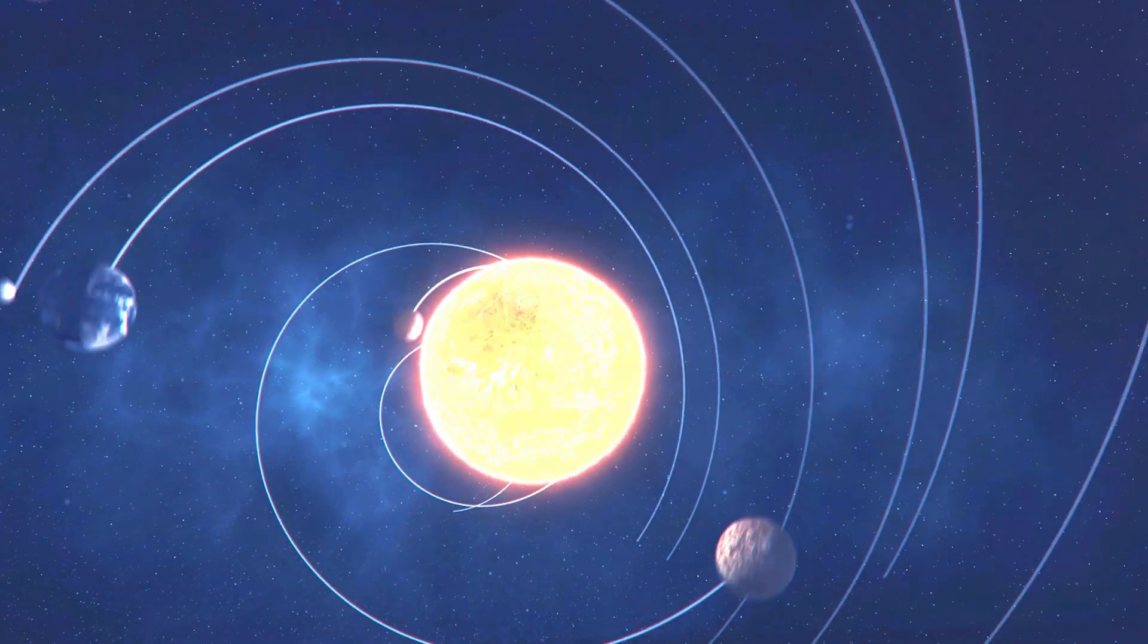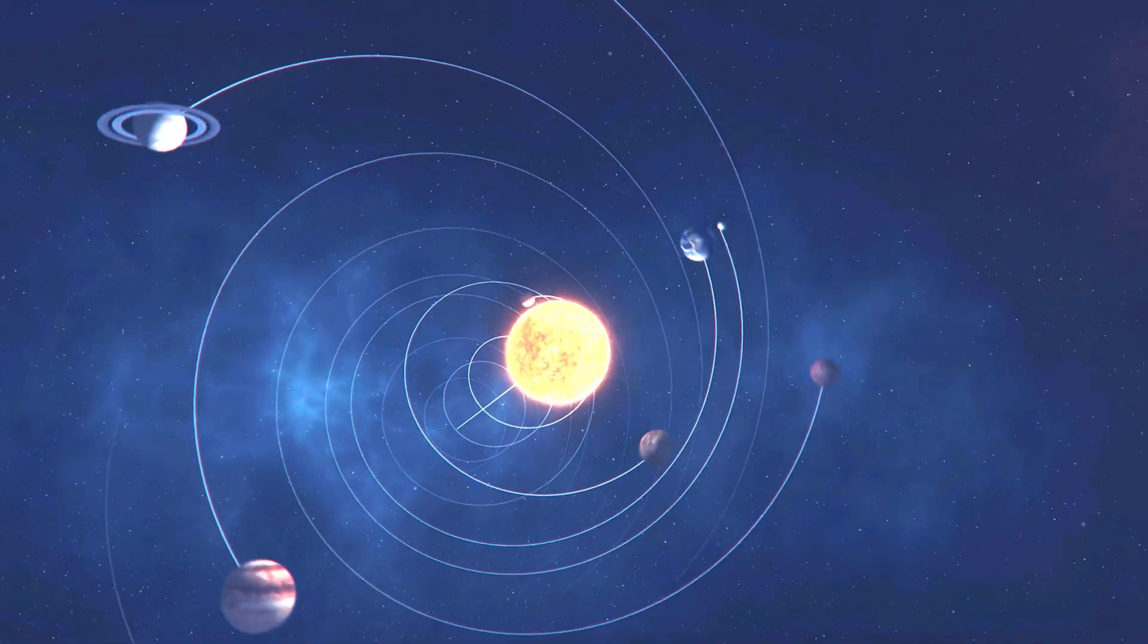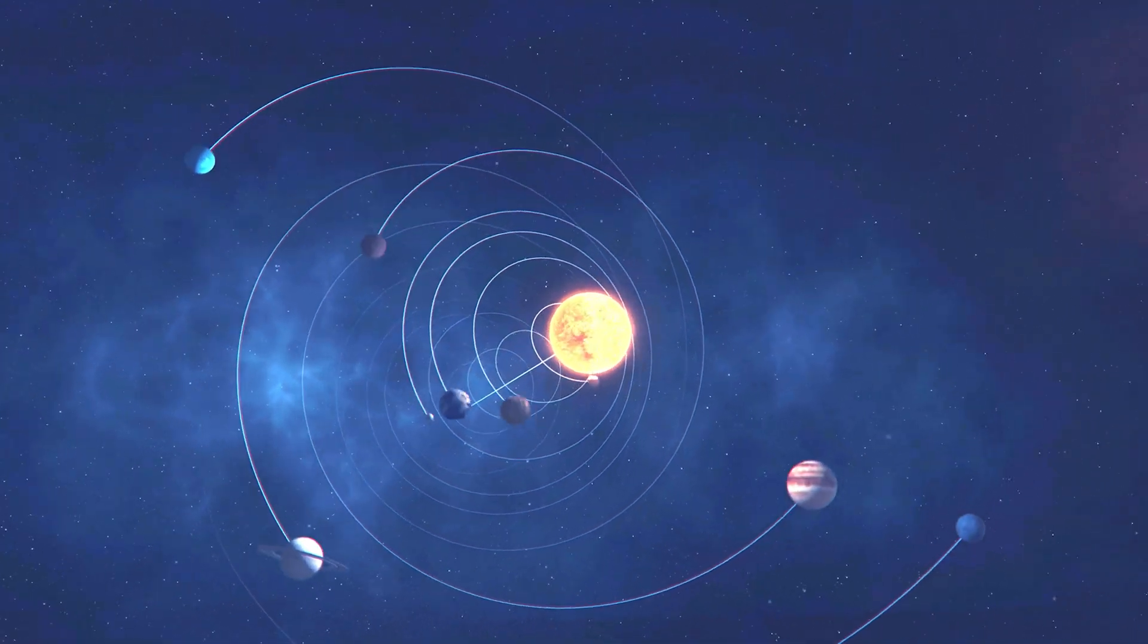It drags the entire solar system with it, every planet, moon and comet, tracing a vast, unrepeatable spiral through the void.